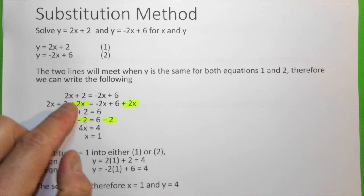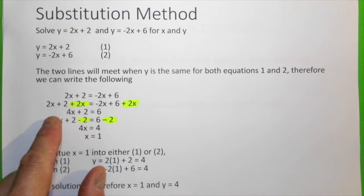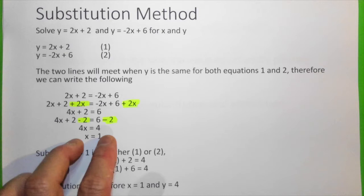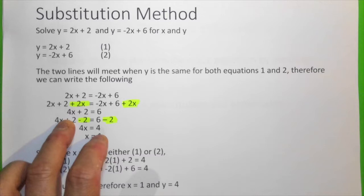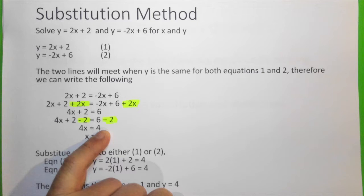This is how we write it. We can eliminate 2x from the right-hand side of the equation by adding 2x, and we get 4x plus 2 equals 6. Eliminating 2 from the left-hand side, we subtract 2 from both sides. Therefore, we get 4x equals 4. Then we divide both sides by 4 and get x equals 1.